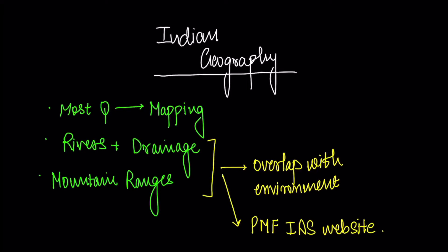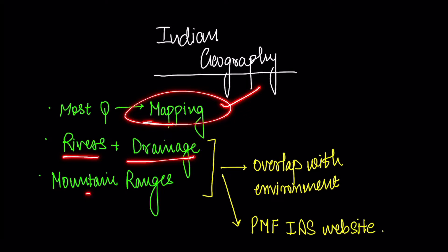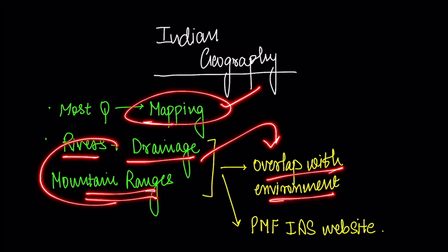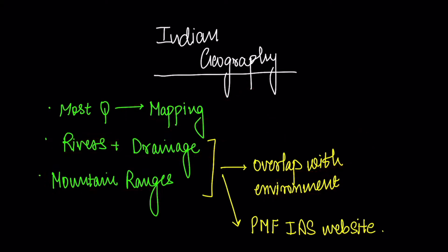Now let's talk of Indian geography. In Indian geography also most questions come on mapping. In this, rivers, drainage and mountain ranges, these are the most important things. And of course you need to overlap this with environment. For environment I have shown you a map before. Try making that map in which all rivers and national parks are together. On PMFIAS website you will get a list - national parks separate, Ramsar sites separate etc. I know it's time consuming work. It takes 2-3 hours. But if you do it it's really helpful.